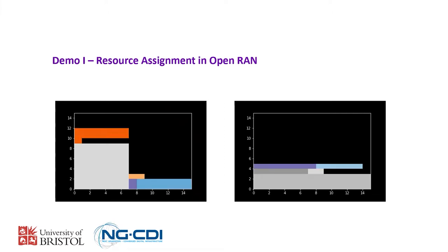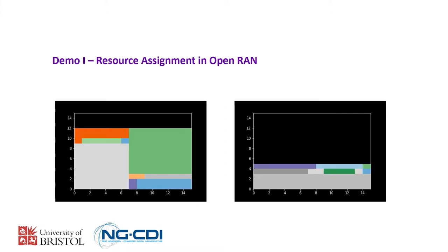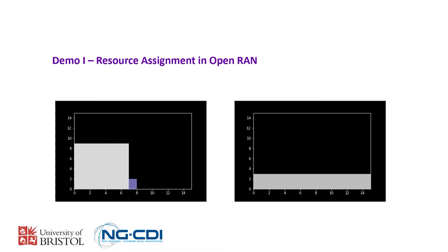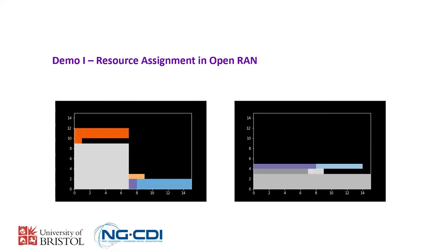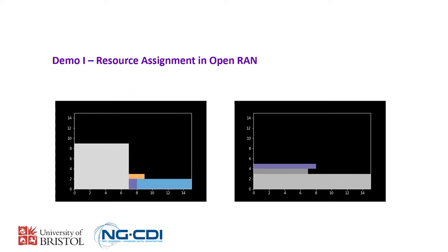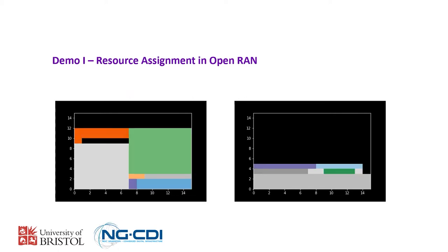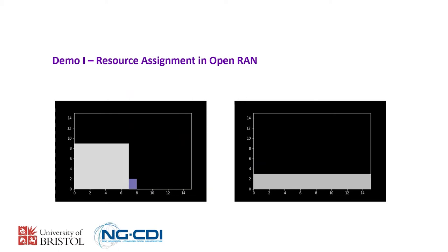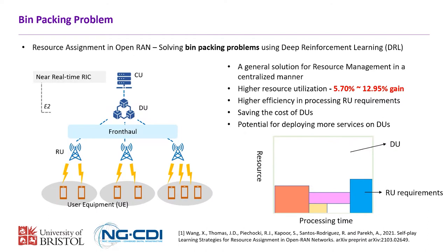This demo contains two parts. The first part is about a resource assignment use case we did in the context of Open RAN, and the second part will be about node association. For the first part, we model the resource assignment problem in Open RAN as a bin packing problem and we provide a solution using Deep Reinforcement Learning.